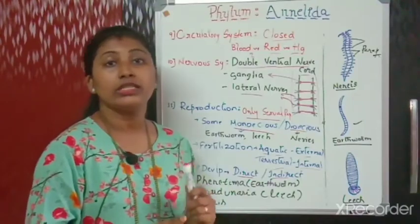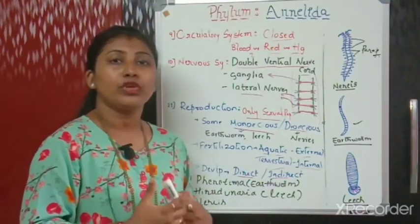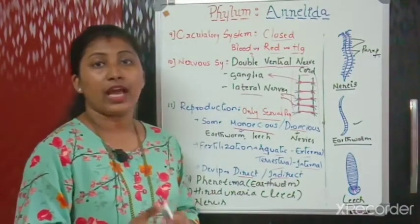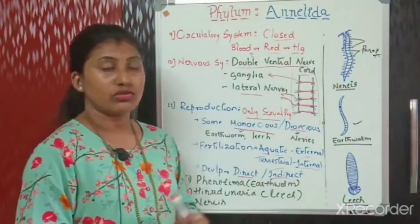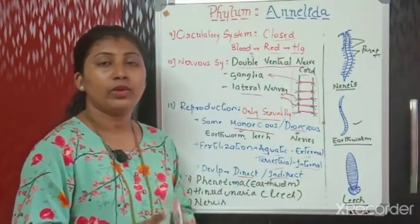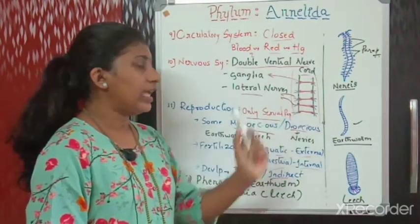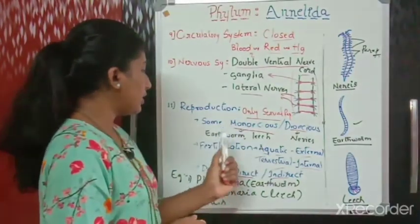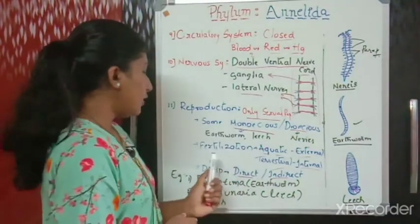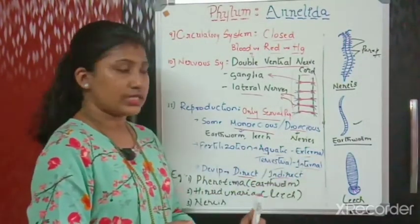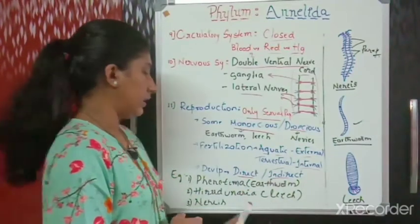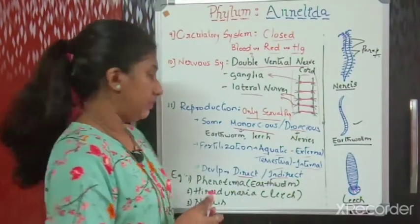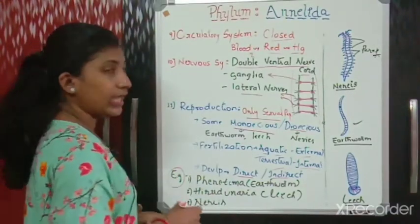Since they exhibit organ system level of organization, you should explain all the organ systems: digestive system is complete; excretory system has nephridia; circulatory system is closed type; nervous system has double ventral nerve cord with interconnected ganglia and lateral nerves. For reproduction: only sexual reproduction takes place, some are monoecious and some are dioecious; fertilization is external in aquatic and internal in terrestrial animals; development may be direct or indirect.